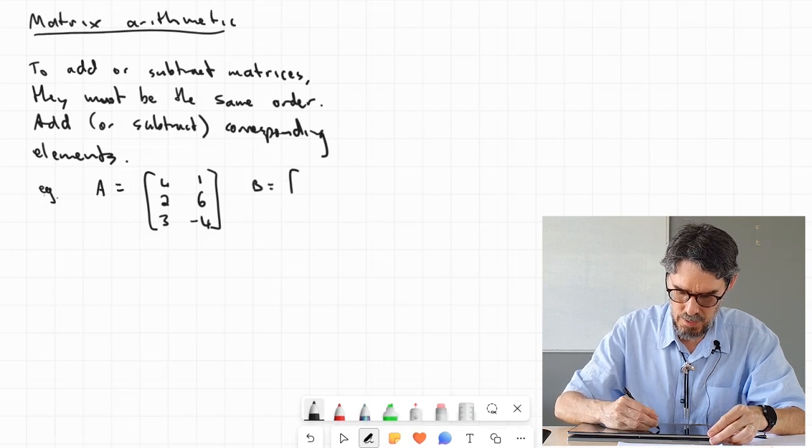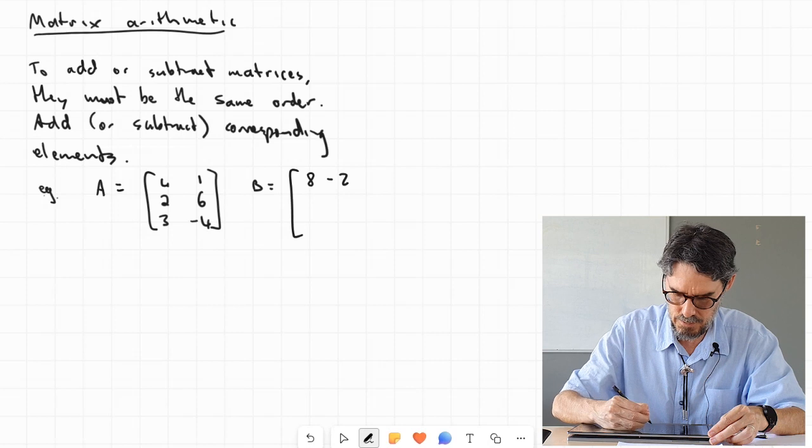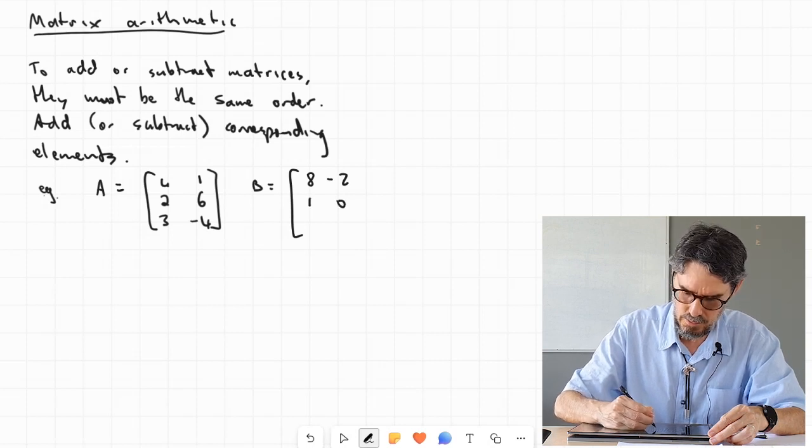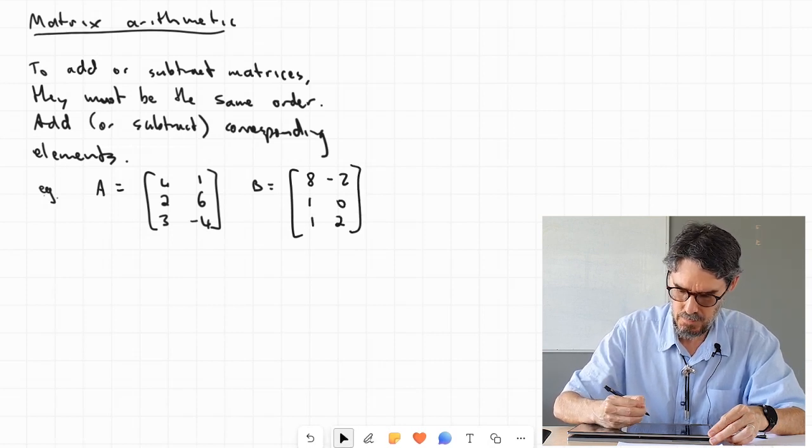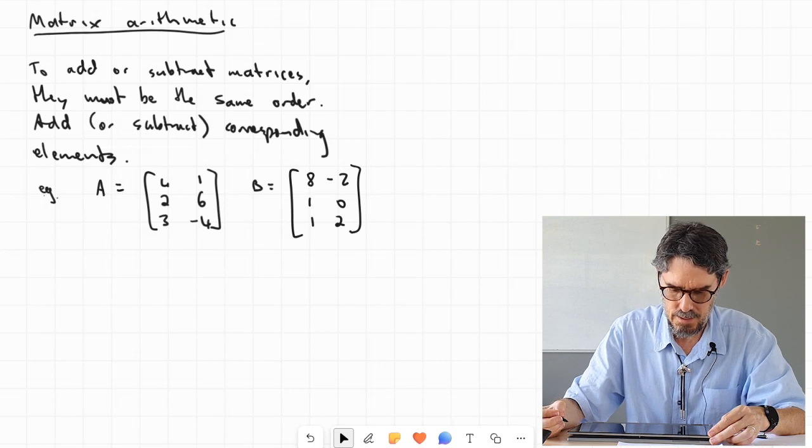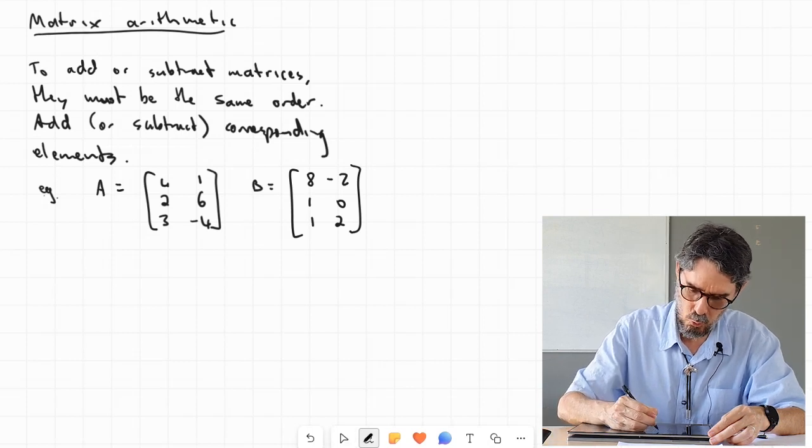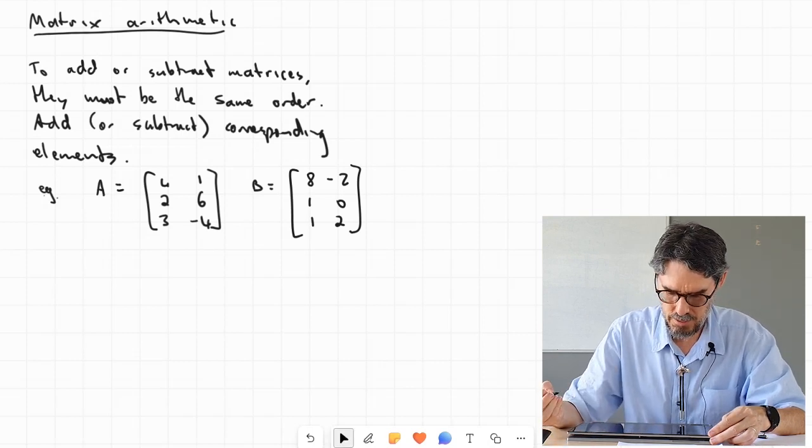And let's say B is 8, negative 2, 1, 0, 1, 2. So I have two matrices, they are the same order, so I can add them and subtract them.